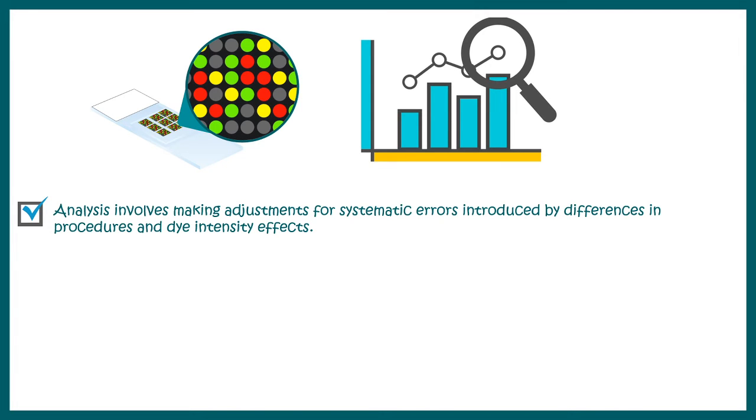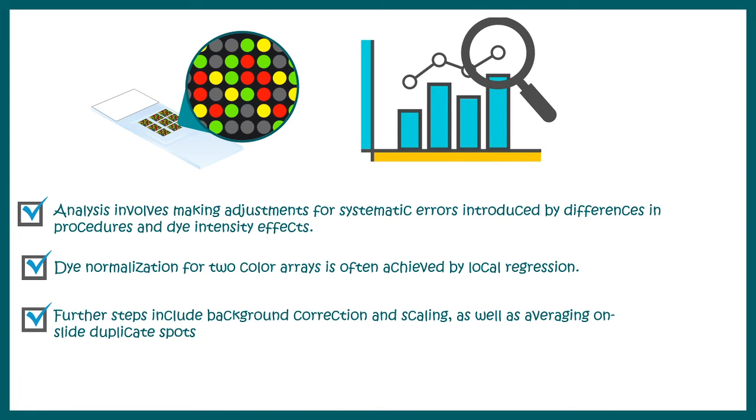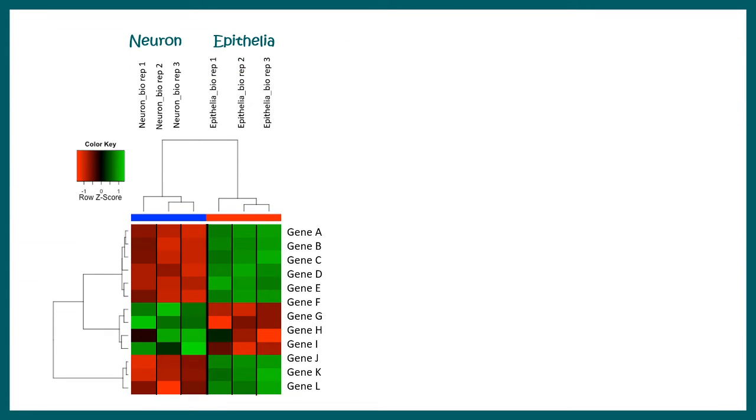So the analysis involves making adjustments for systematic errors including differences in intensities. Then the normalization of two color arrays is achieved by local regression. Further steps include background correction, scaling, as well as averaging the signals coming from duplicate spots. All of these things are achieved and ultimately a heat map is generated to represent the data.